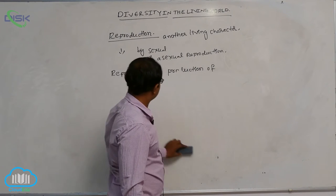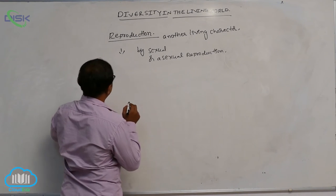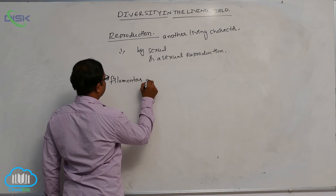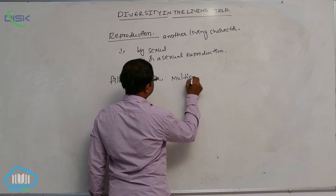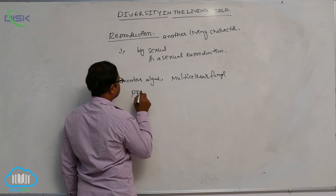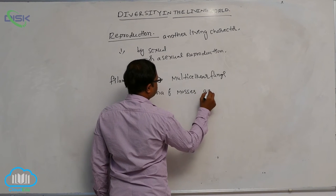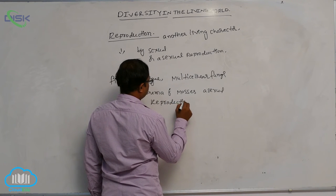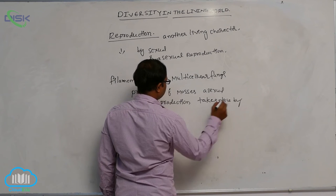In filamentous algae, multicellular fungi, and protonema of mosses, asexual reproduction or vegetative reproduction takes place by fragmentation.